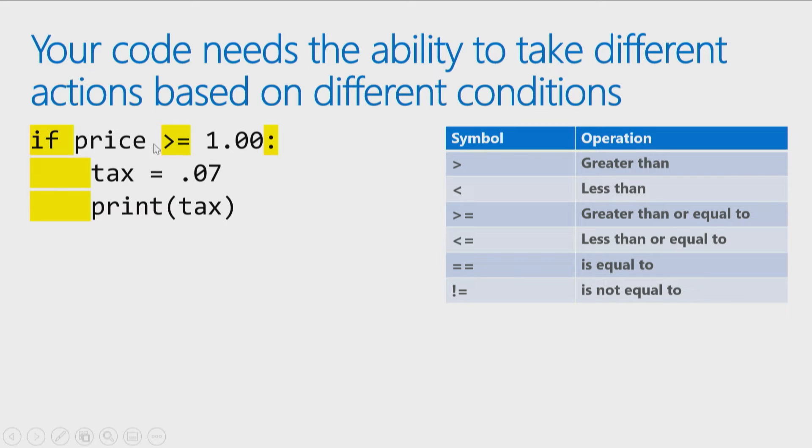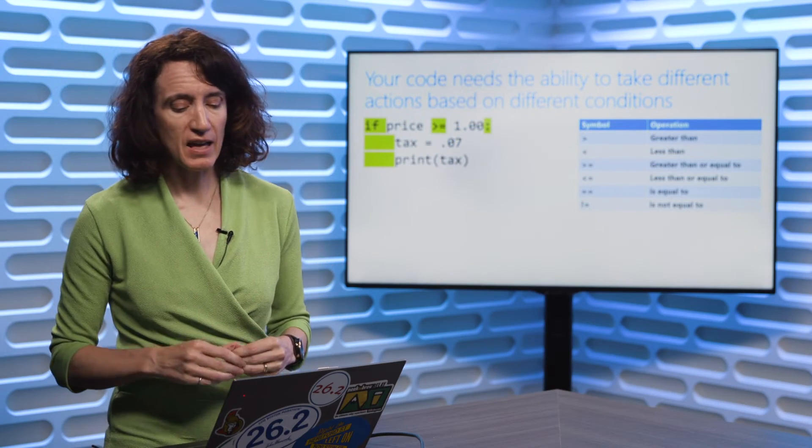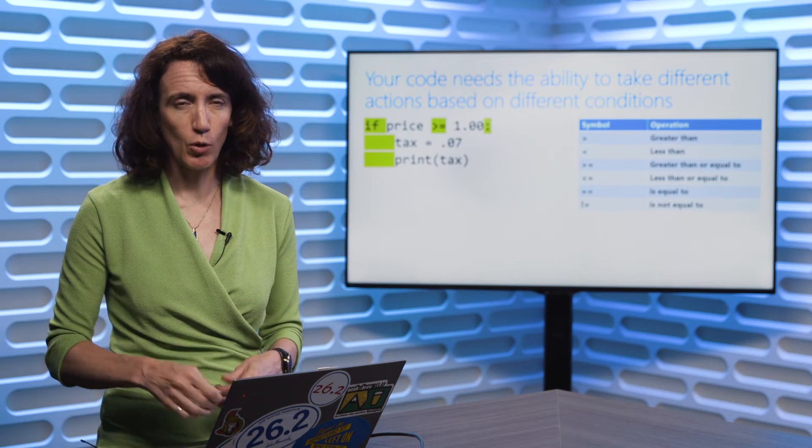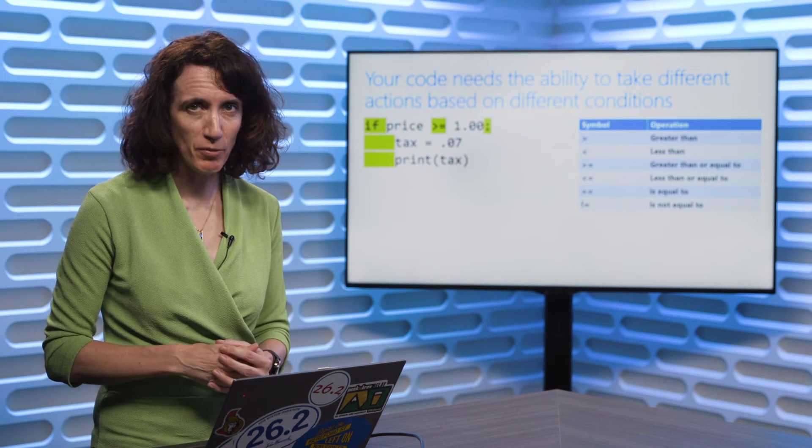I'm using a greater than or equal to symbol here. There are different symbols we use depending on the condition we're looking for: greater than, less than, greater than or equal to, less than or equal to. The two most important ones, which do vary from programming language to programming language, are equal to, which would be a double equal sign, and not equal to in Python, which is an exclamation mark equal.